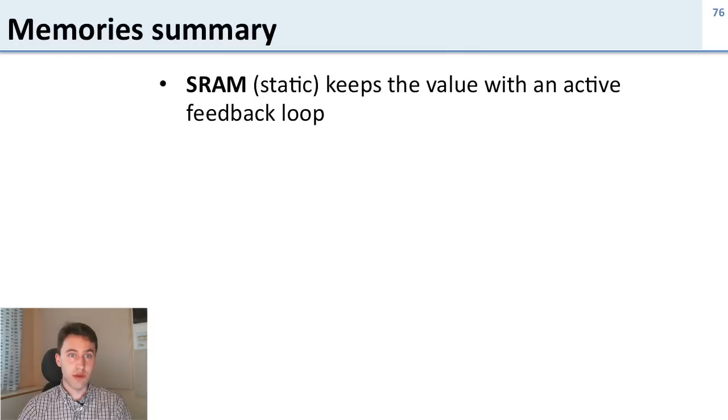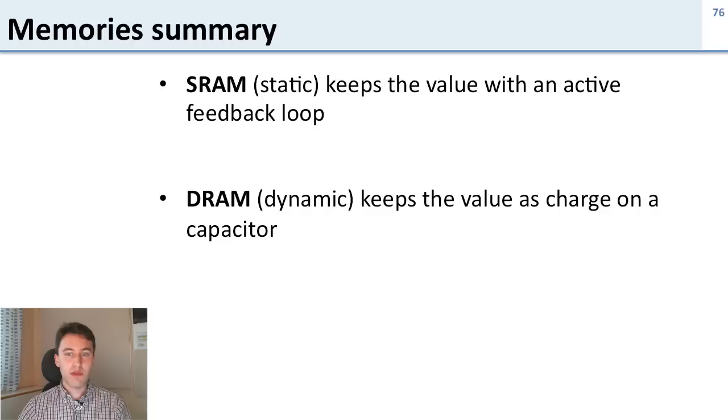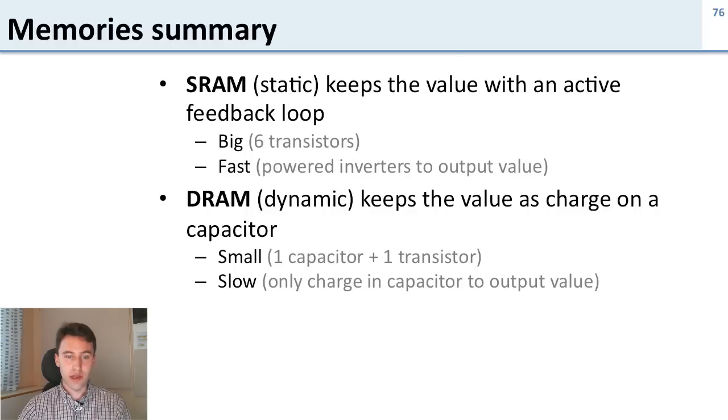Let's summarize what we said about memories. SRAM is static and it keeps the value with an active feedback loop. So it needs power and ground and it's much bigger but it's faster. DRAM is dynamic memory, keeps the value as charge on the capacitor which means it's going to be much slower but can also be smaller. So SRAM is big and fast and DRAM is small and slow.